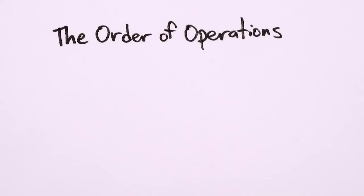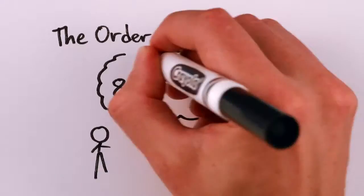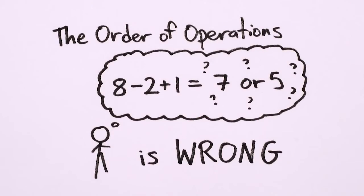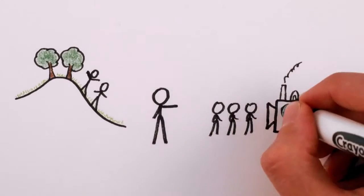So, while the order of operations isn't technically wrong, because most of the time it'll give you the standard answer, it's morally wrong. Because it turns humans into robots.